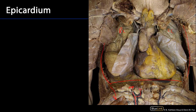We can see that the pericardium has been incised and reflected away. The portion reflected away is the fibrous pericardium as well as the parietal layer of the serous pericardium, which is adhered to the deep surface of the fibrous pericardium. The space between this layer and the visceral layer upon the heart itself is the pericardial cavity.